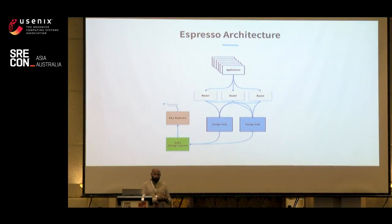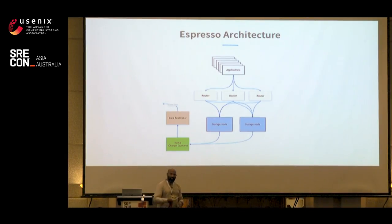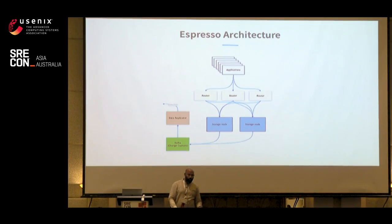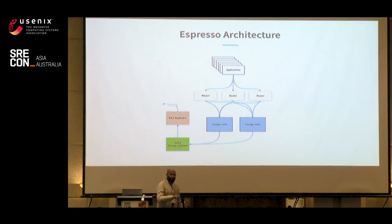Any write request that comes in on the master gets written into MySQL, from there it goes into the binlog, where it gets converted into a Kafka stream and pushed to Kafka. We then have another product called Data Replicator, which reads off this Kafka stream for all the change captures and is responsible for replicating data cross-colo. Data Replicator is a stateless product — it takes a particular partition it's responsible for, reads the data, and replicates it to whatever destination it's supposed to replicate to.